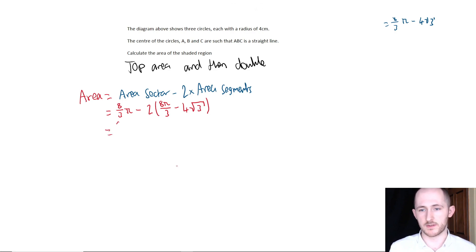We have 8 over 3 pi. Expand these brackets, so 2 times 8 pi over... 16 over 3 will give me 16 pi over 3, and then plus 8 root 3.